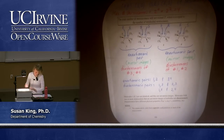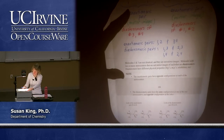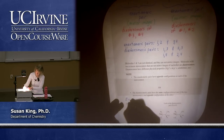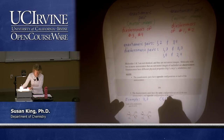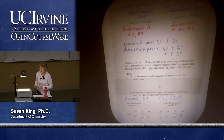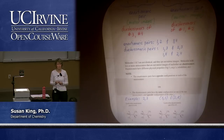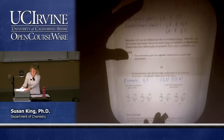Enantiomeric pairs have opposite configurations at each stereocenter. Diastereomeric pairs have the same configuration at one of the two and opposite at the other. An example here is 2 and 3: the configurations are SS and SR. For 2 and 3 we've kept the same configuration at the stereocenter on the left and changed it on the right. So that means we have diastereomers.